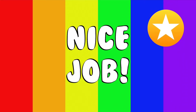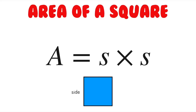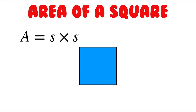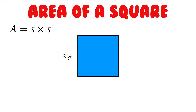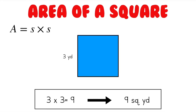Now that you're a pro at finding the area of a rectangle, finding the area of a square will be even easier. Since every side of a square is equal in length, we just need to know that number that every side shares and multiply it by itself. The formula for finding the area of a square is just the length of one side times itself. I'll work through the first one with you. As you can see, the side length for this square is 3, so we just need to do 3 times 3, which is 9. Since our square is given to us in yards, our answer should be in square yards, giving us a total of 9 square yards. That's even simpler than finding the area of a rectangle.